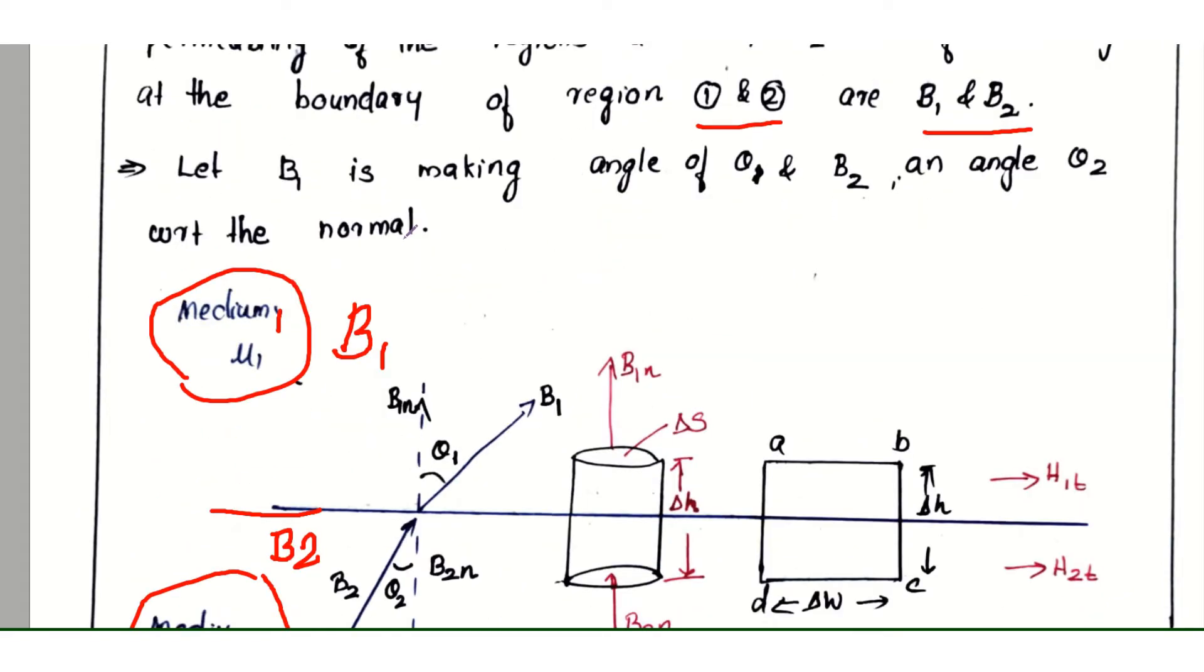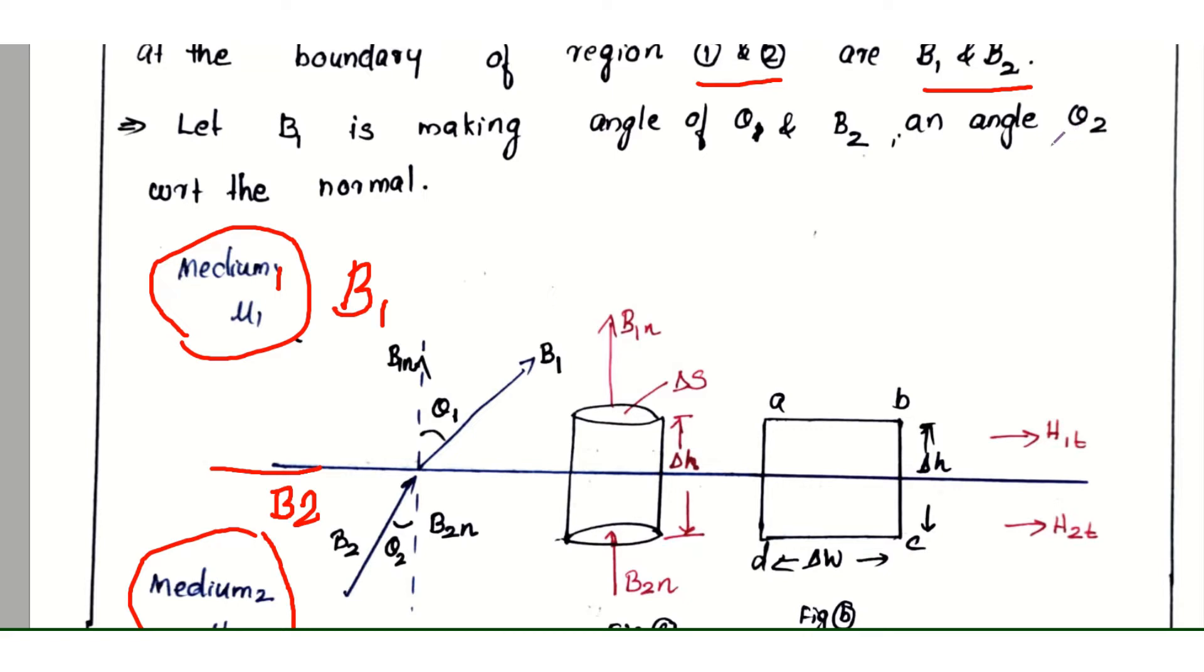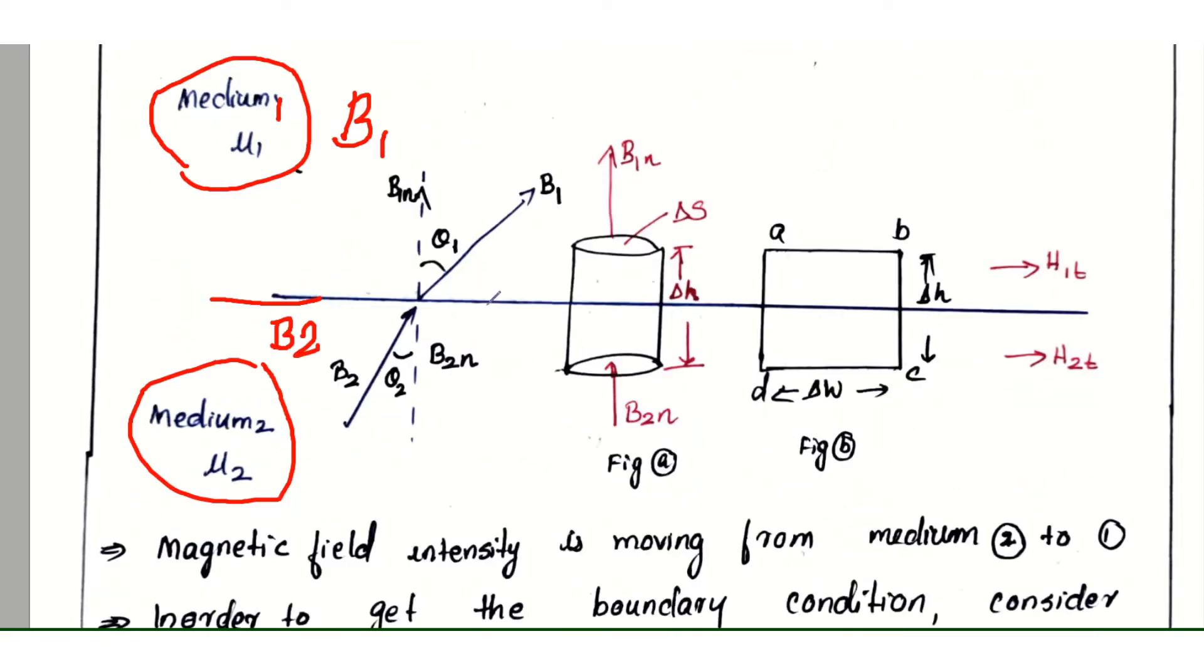Let B₁ make angle θ₁ and B₂ make angle θ₂ with respect to the normal. These are the magnetic field intensities.